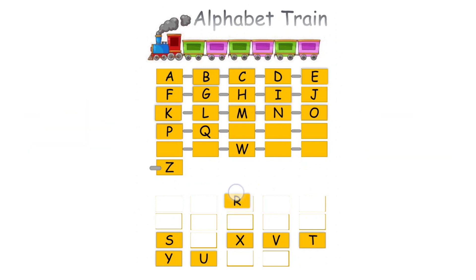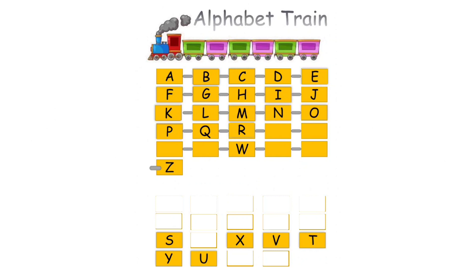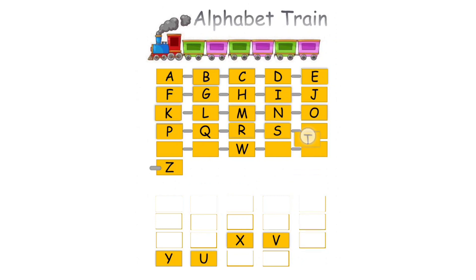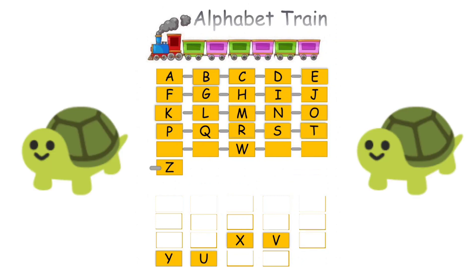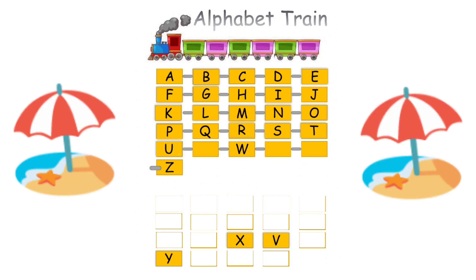R. R for Rabbit. S. S for Sun. T. T for Turtle. U. U for Umbrella.